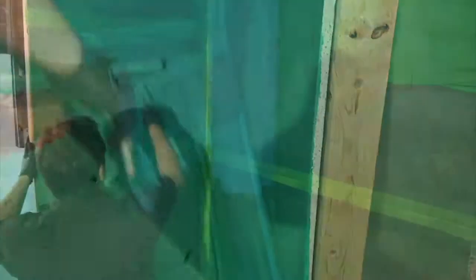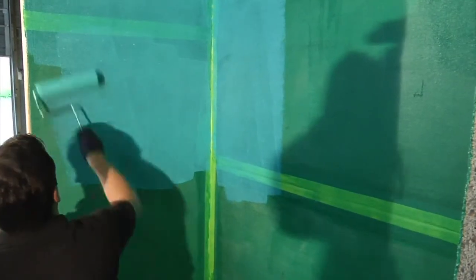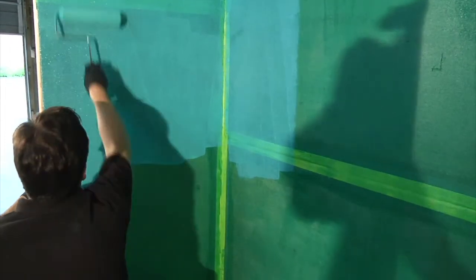Roll on the second coat over everything, using the same roller you used the first time. When your second coat is complete, let it dry for six to eight hours before you begin tiling.